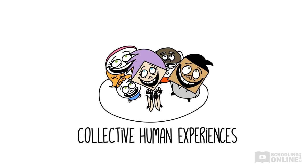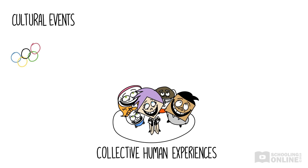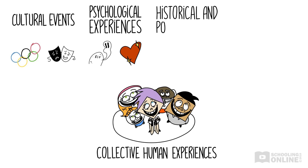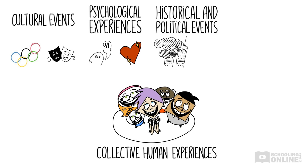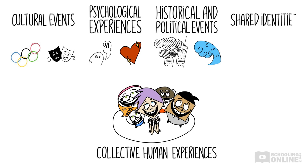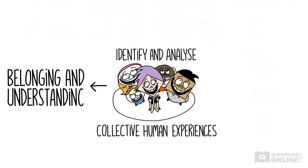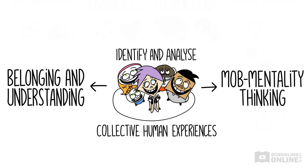Some collective human experiences include large-scale cultural events, like the Olympics or watching the theatre; shared psychological experiences, such as the fear of death or falling in love; historical and political events, such as 9/11 or natural disasters; and shared identities based on gender, race, sexuality, class or disability status. It is not enough to just identify these experiences — talk about the effects of collective experiences. Do they create a sense of belonging and understanding? Or do they lead to dangerous mob mentality thinking, which is when people irrationally and unquestioningly conform to what the group thinks and feels?